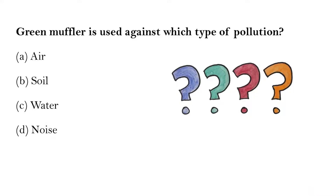Green Muffler is used against which type of pollution? The options are: air, soil, water, or noise. The answer is noise.